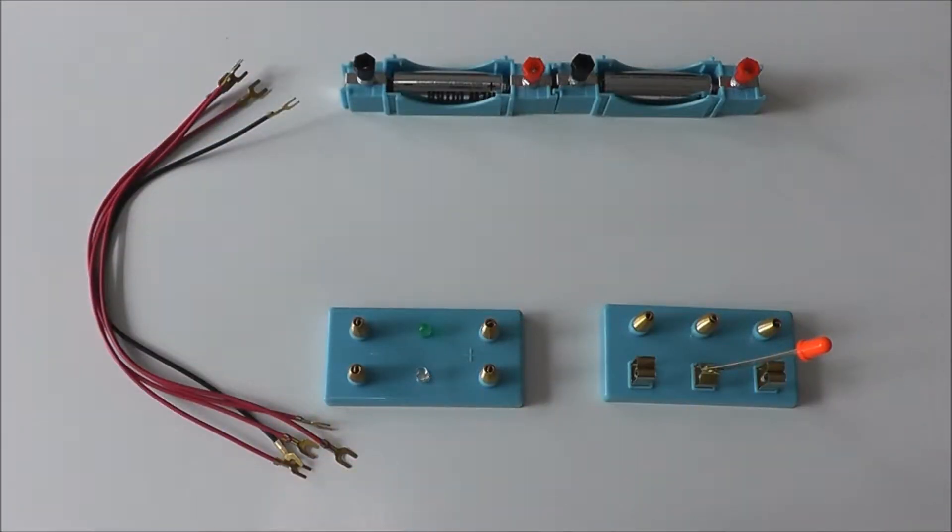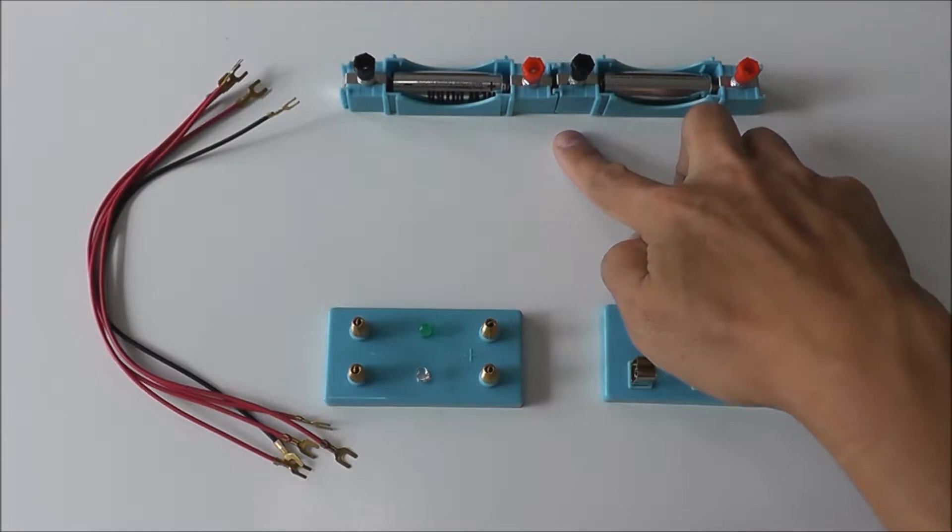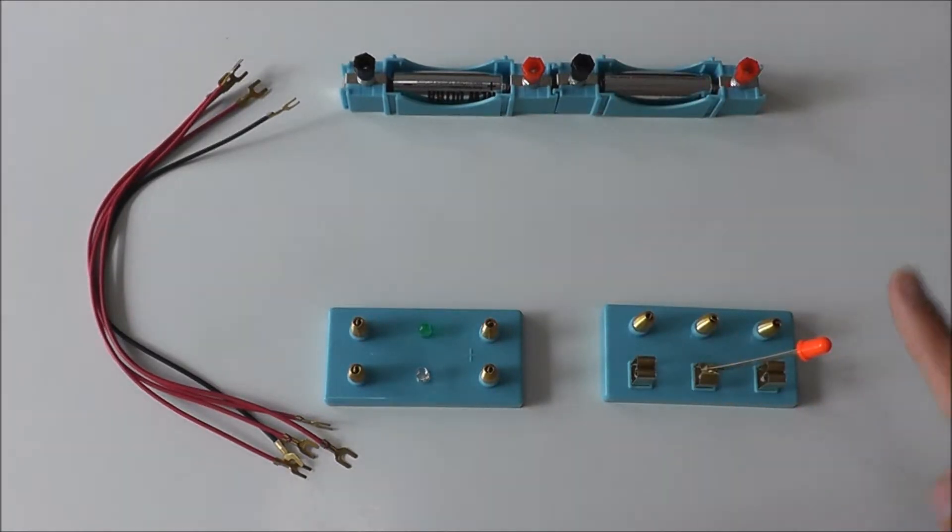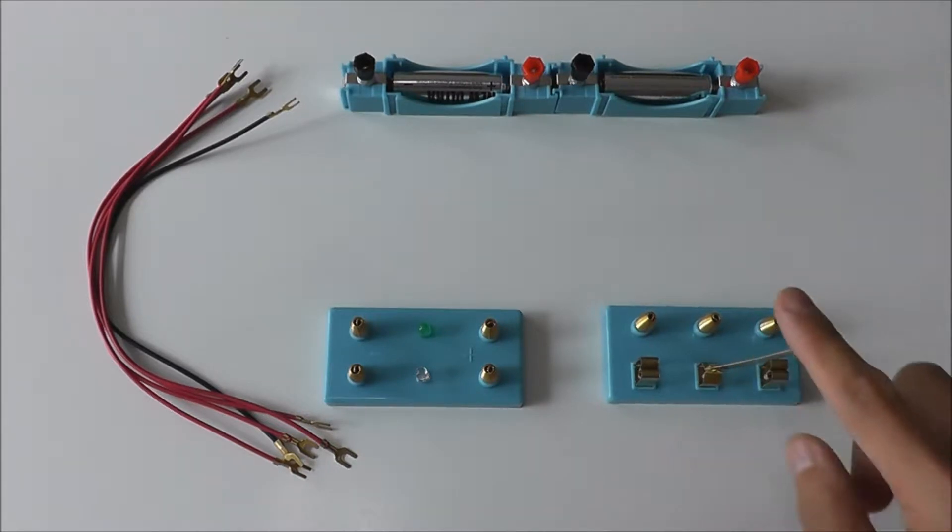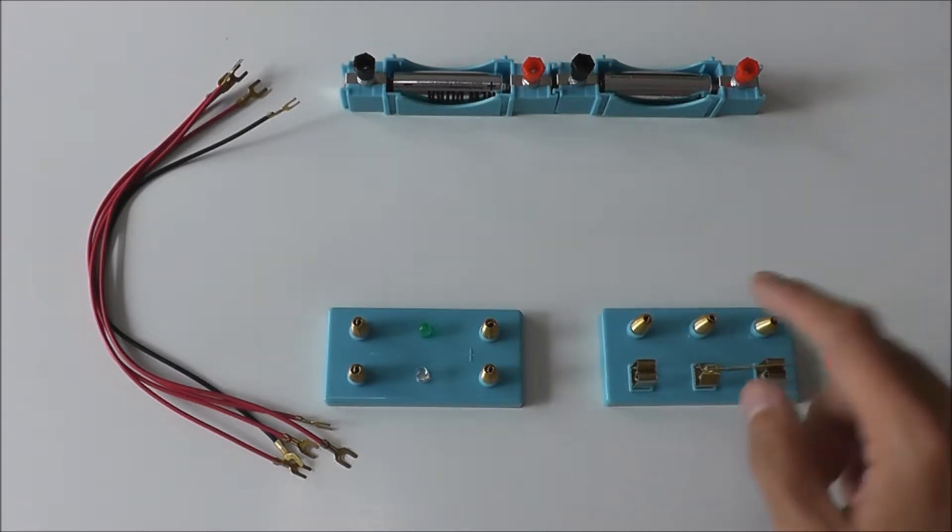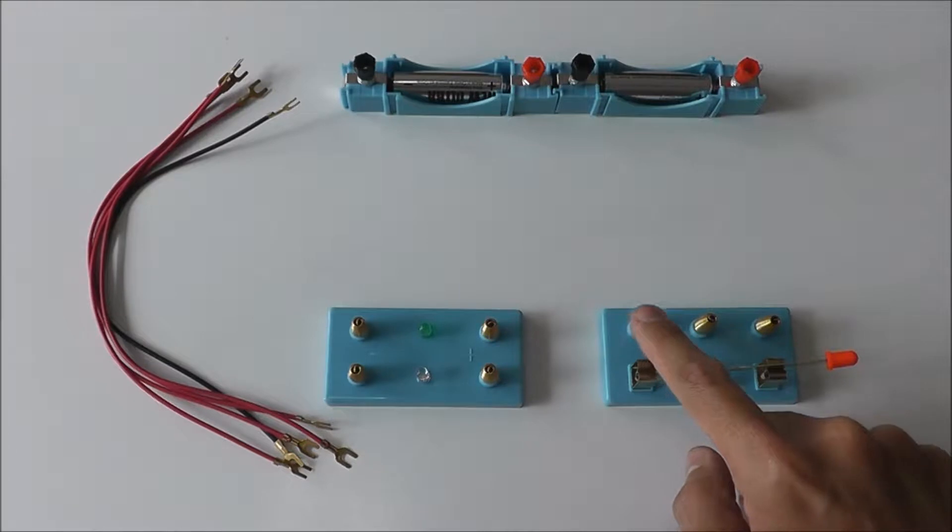In this lesson we're going to learn how to connect a traffic light circuit using a two-way switch. The apparatus we require will be two battery holders with batteries connected in series. We also need a two-way switch which is quite special - it has three connection points: one, two, three.